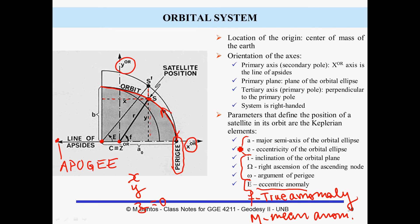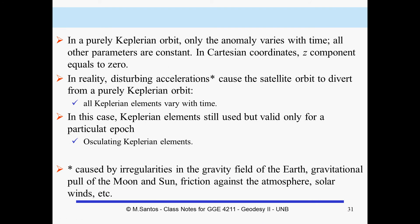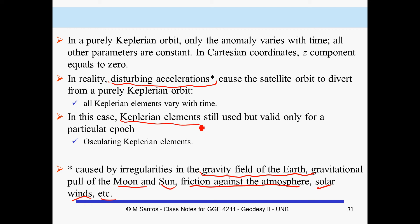In a purely Keplerian orbit, all five of these elements are constant — this is something we must bear in mind. In reality, they are not. What causes these Keplerian elements to change are the disturbing accelerations, caused by irregularities in the gravity field of the Earth, the gravity of the Moon and Sun, atmospheric friction, solar winds, etc. In reality, we use Keplerian elements but all of them vary with time, and for every given instant we have what we call the osculating Keplerian elements.